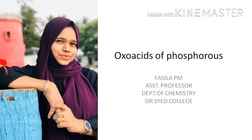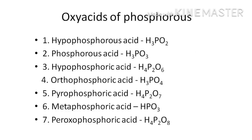Welcome all. Here I am going to discuss about the oxoacids of phosphorus. Phosphorus forms a large number of oxyacids or oxoacids and it comprises of two series: the phosphorus acid series and the phosphoric acid series, in which the important ones are discussed here.